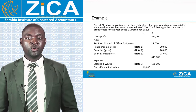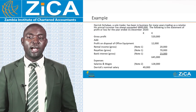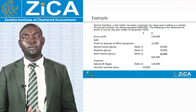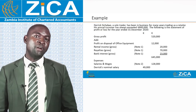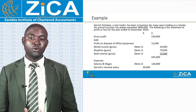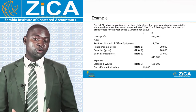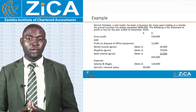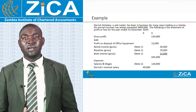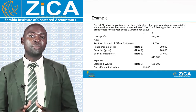Derek East Chalwe is a sole trader who has been in business for many years as a retailer; his annual turnover has always exceeded 800,000 kwacha. The statement of profit or loss for the year ended 31st December 2020 shows: gross profit of 520,000 kwacha; other income including profit on disposal of office equipment of 12,000 kwacha; rental income (gross) of 20,000 kwacha; royalties (gross) of 70,000 kwacha; and bank interest (gross) of 23,000 kwacha.